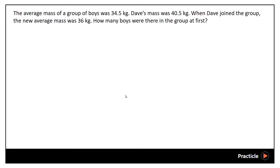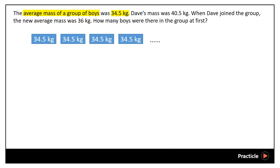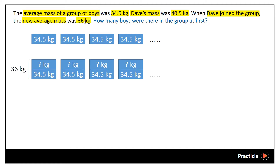Hi guys, let's take a look at this question. We are given that the average mass of a group of boys was 34.5 kg. Then we are also given that Dave's mass was 40.5 kg, and when Dave joined the group, the average mass became 36 kg. So we are supposed to find how many boys were there in the group at first.